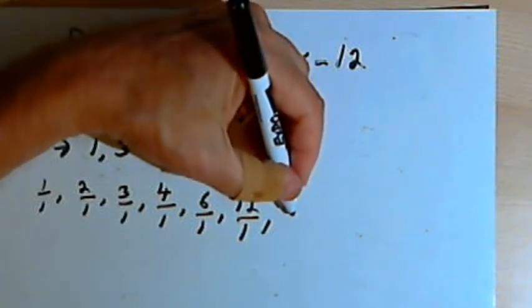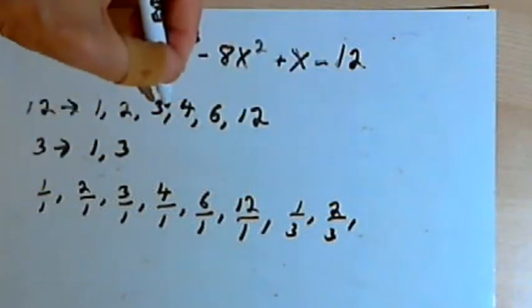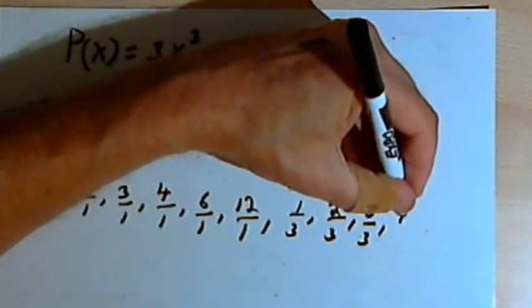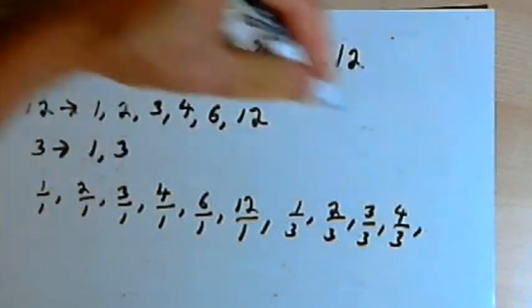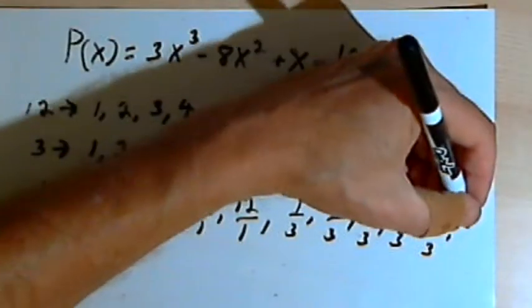Then I want to go back and take each of those factors again and put them over 3. So that's 1/3, 2/3, 3/3, 4/3, 6/3, and 12/3.